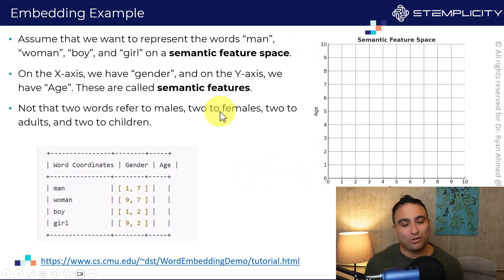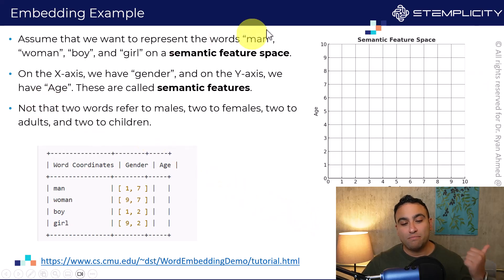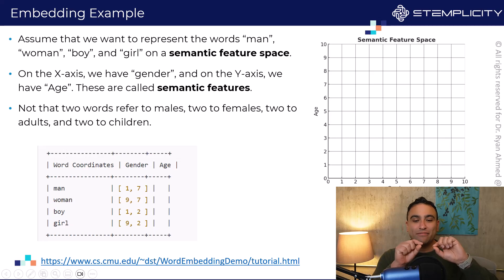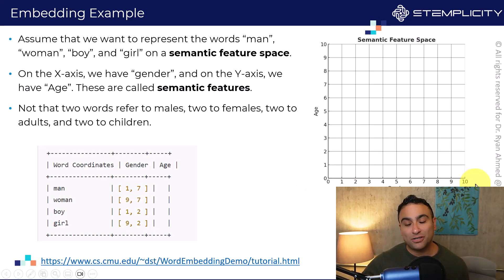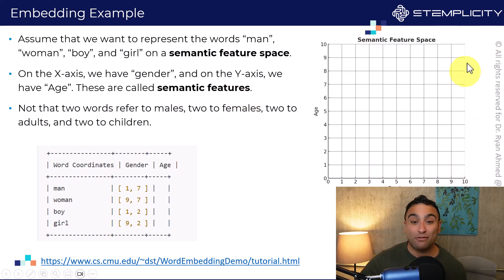Let's assume I would like to represent four words in what we call a semantic feature space. These words are man, woman, boy, and girl. We're going to have two semantic features: one is gender, and the other is age on the y-axis. So these are what we call semantic features, and this is what we call the semantic feature space.